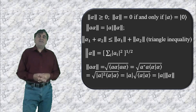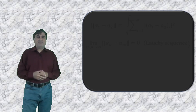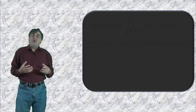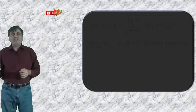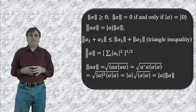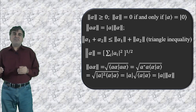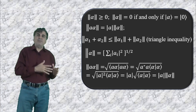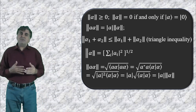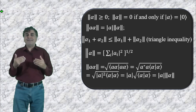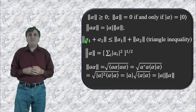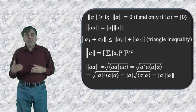The third property, the triangle inequality, is a little more involved and is left unproven here. Now the question is what the norm of a vector physically represents. Since the inner product is a generalization of the dot product of vectors in three-dimensional vector space, and the dot product of a vector with itself gives the length of the vector, the norm of a vector in Hilbert space is a generalization of the magnitude or length of a vector in three-dimensional space.